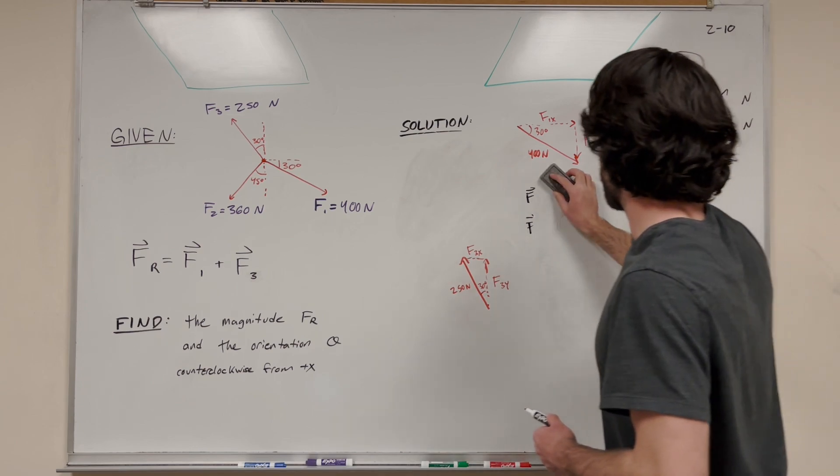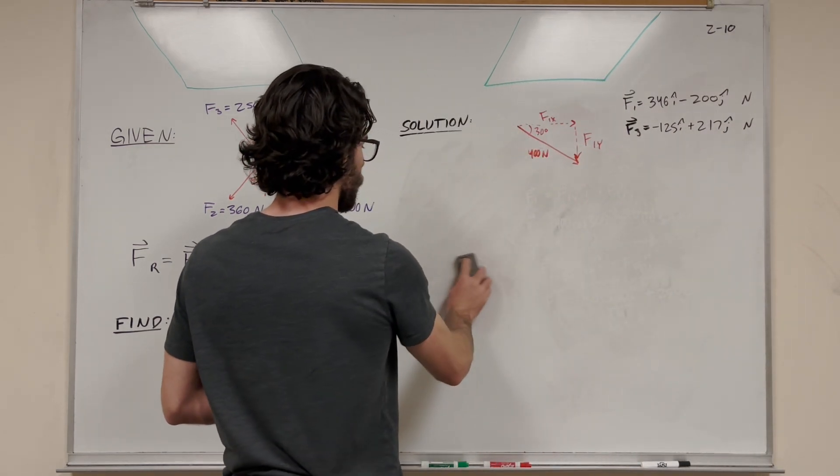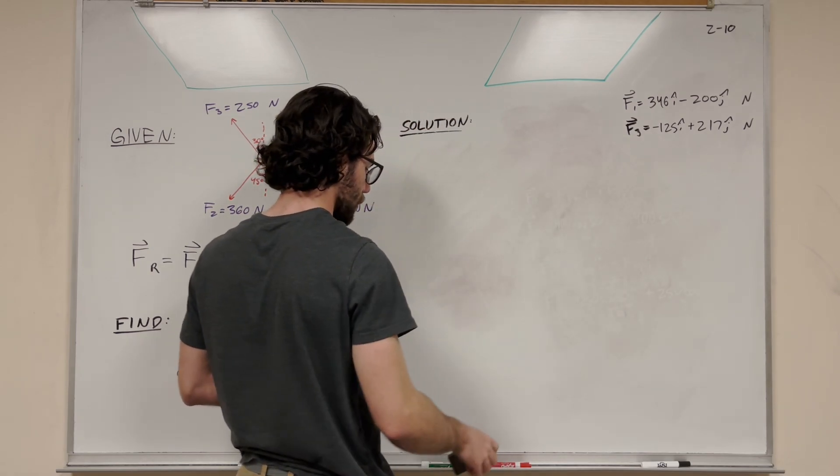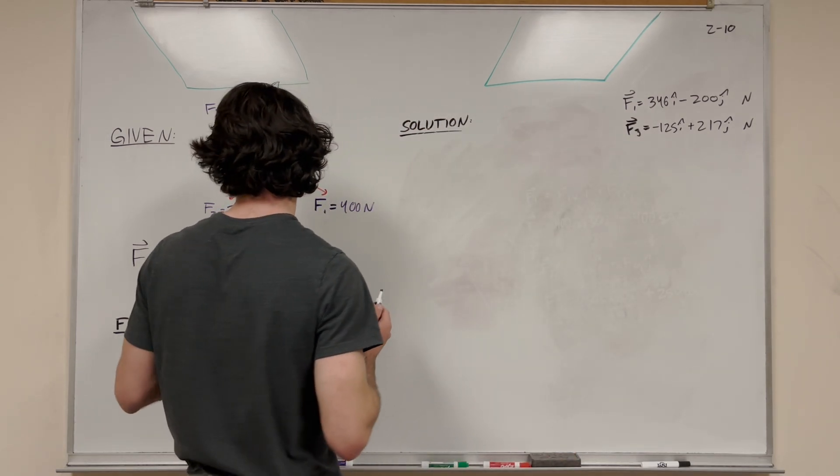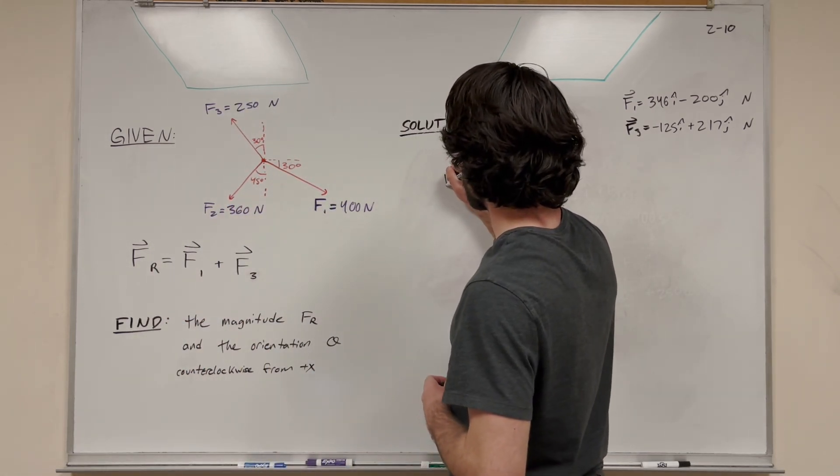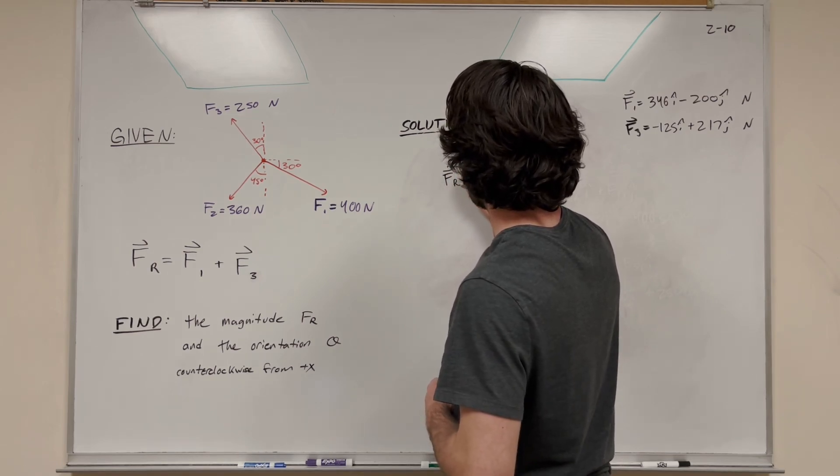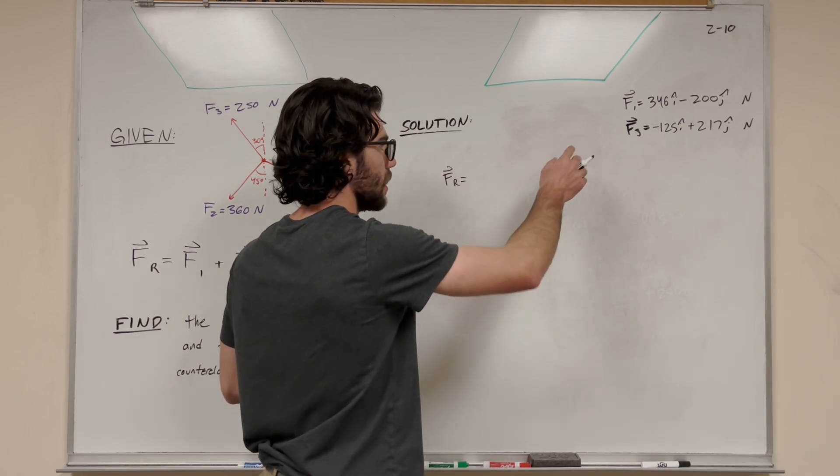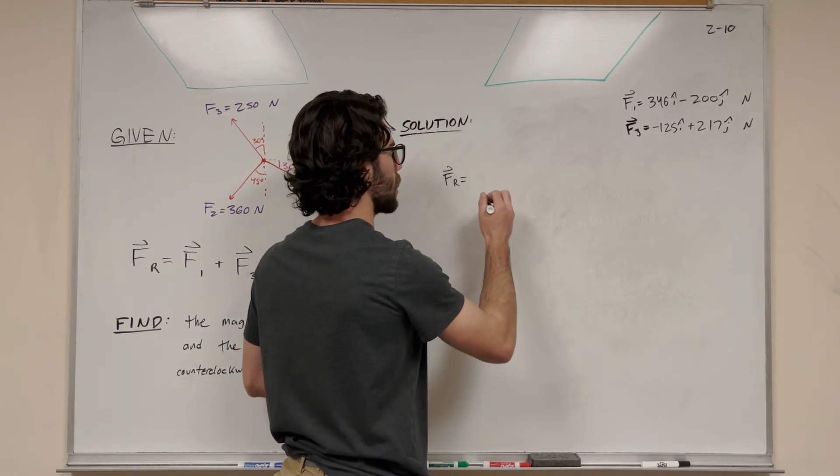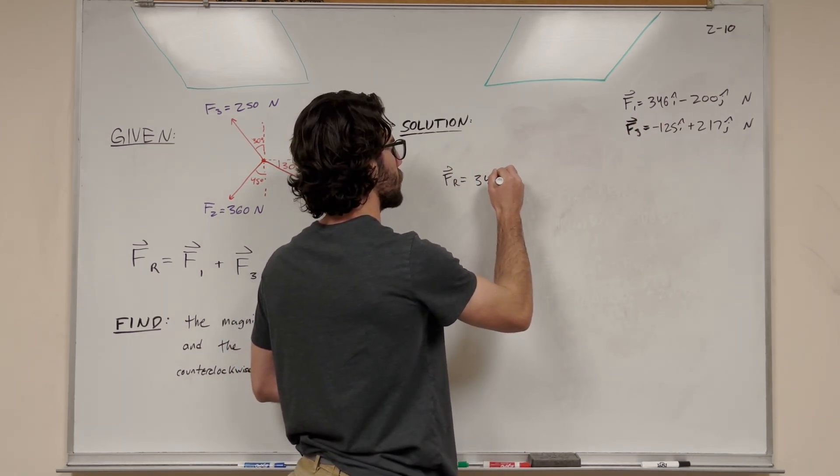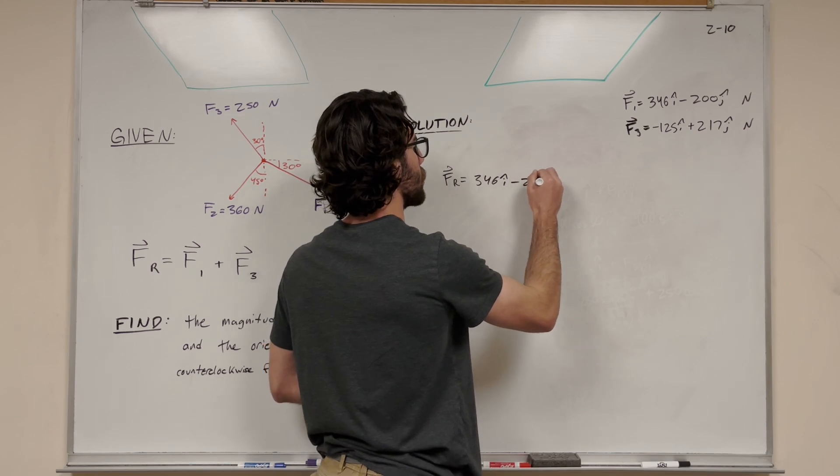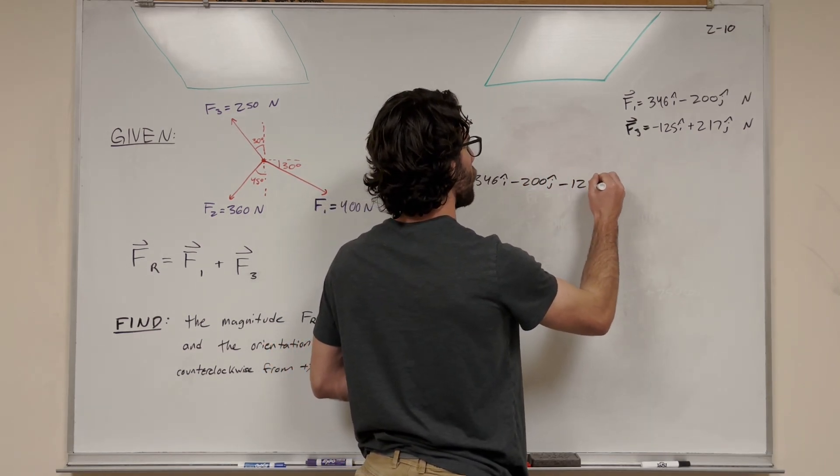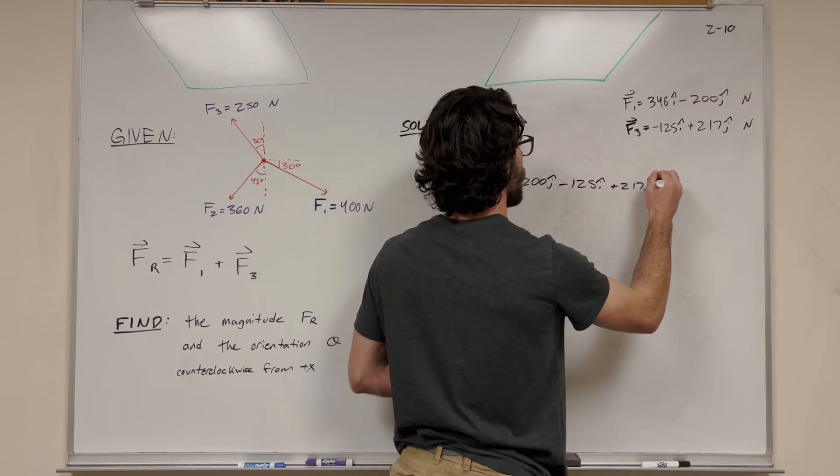Now we get into the vector addition part where we actually add the vectors together and get our answer. The resultant force vector equals F1 plus F3. Instead of just writing the vectors, we write the components we found. So it's 346i minus 200j plus negative 125i plus 217j.